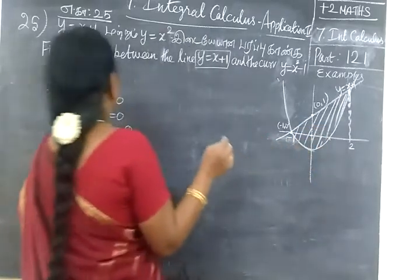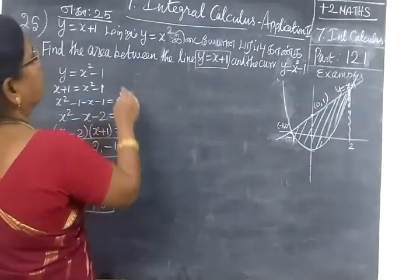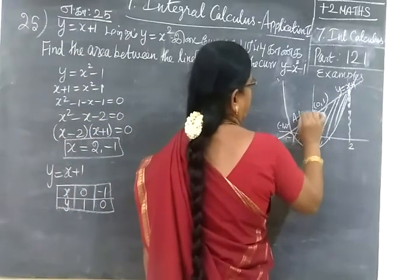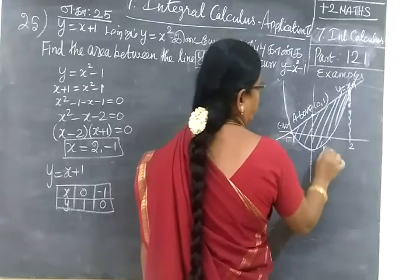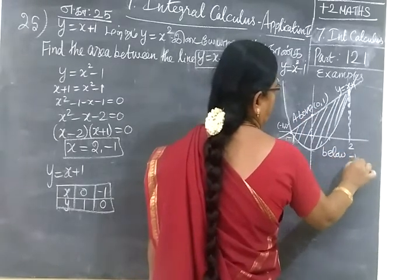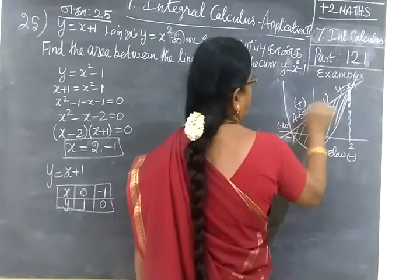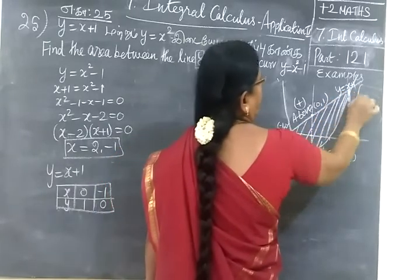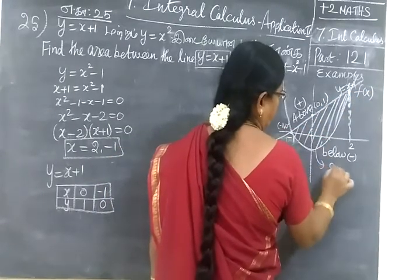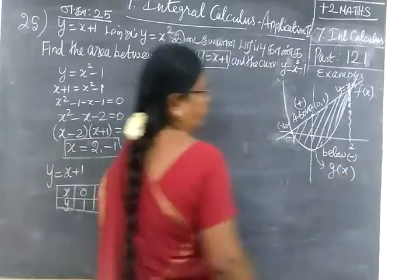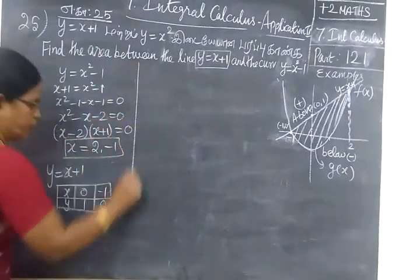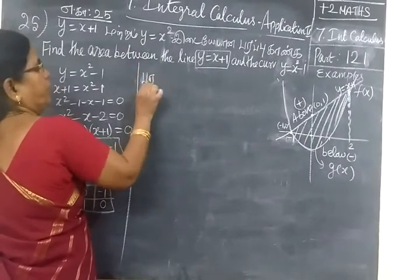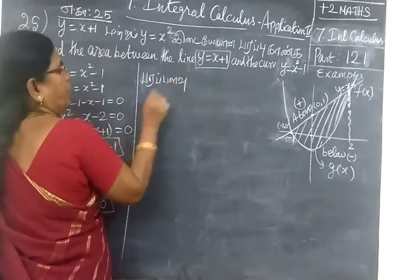This is with respect to x. The curve above is the straight line and below is the parabola. Below is minus, above is plus. So this is the straight line — this is f of x, this is d of x. First we are writing above, so area is equal to the integral.